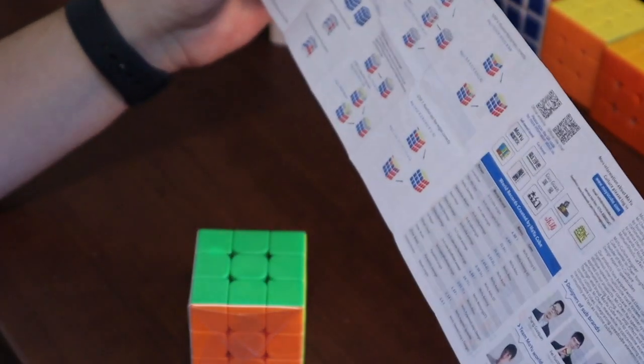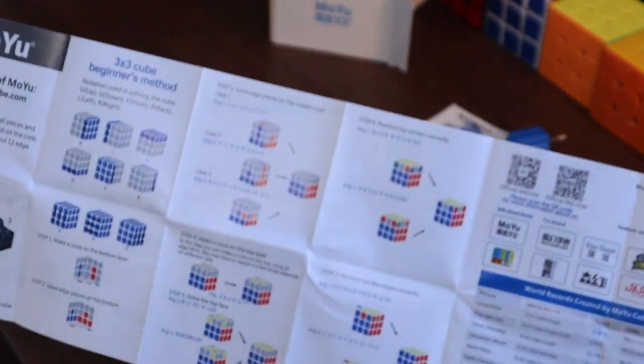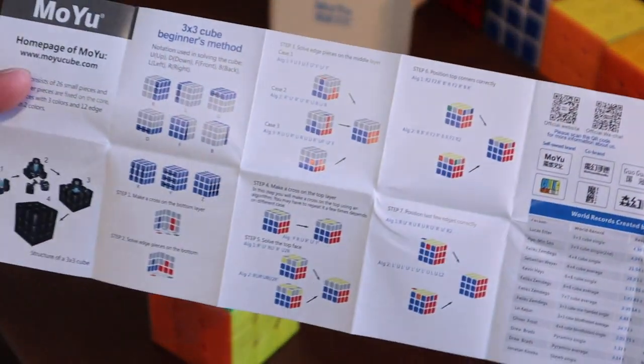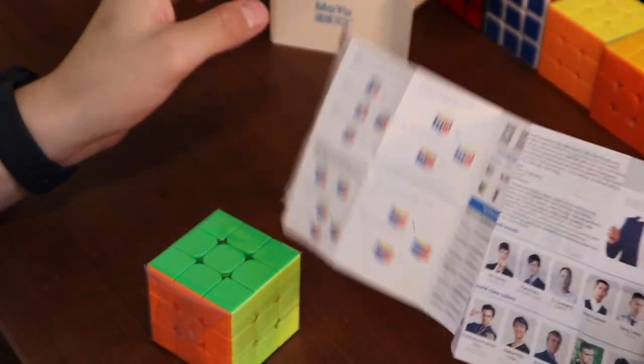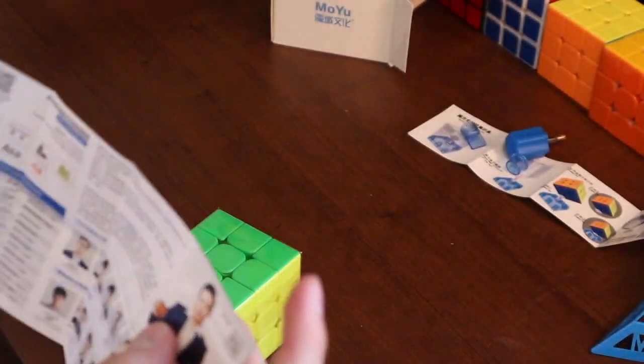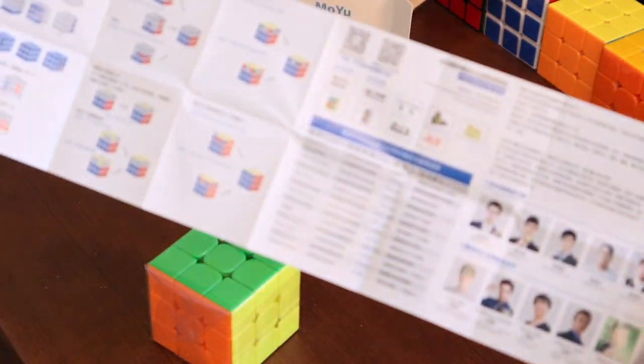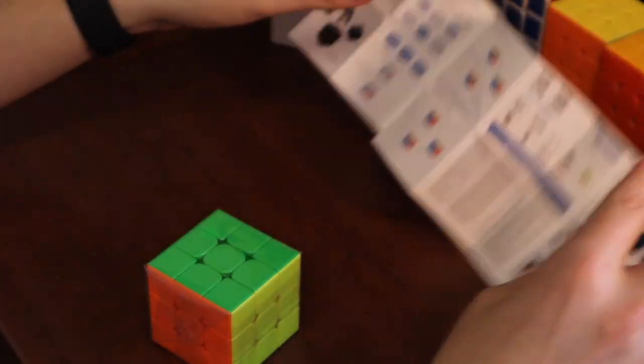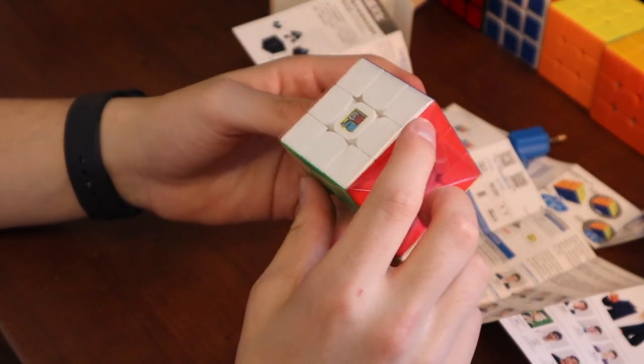And here is a manual, like always, like most Moyu cubes. It shows you how to solve it. You guys can see there. And then the designers of the cubes are here, and then this is how to solve it in Chinese I'm guessing. So yeah, that's pretty basic on the cubes, but let's check out the actual cube and see how it turns.